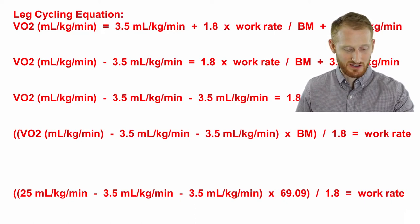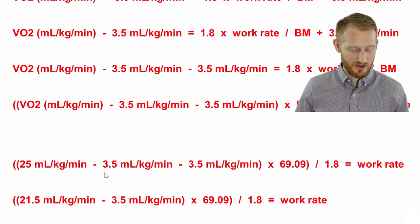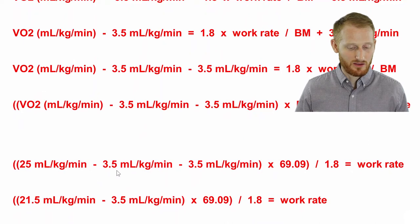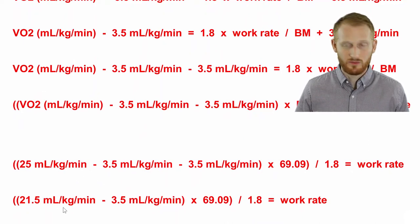Let's start doing this step by step here. Let's take the 25 and subtract one of the 3.5 values from that, so we end up with 21.5. Subtracting out the other one, we're going to end up now with 18 mls per kg per minute.